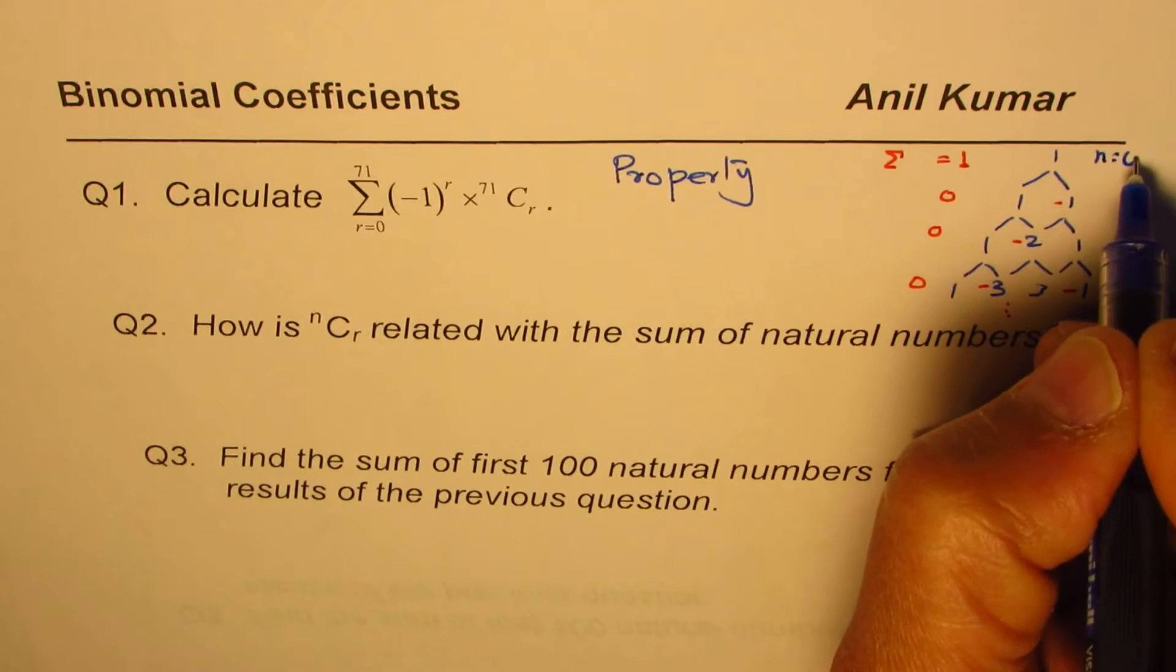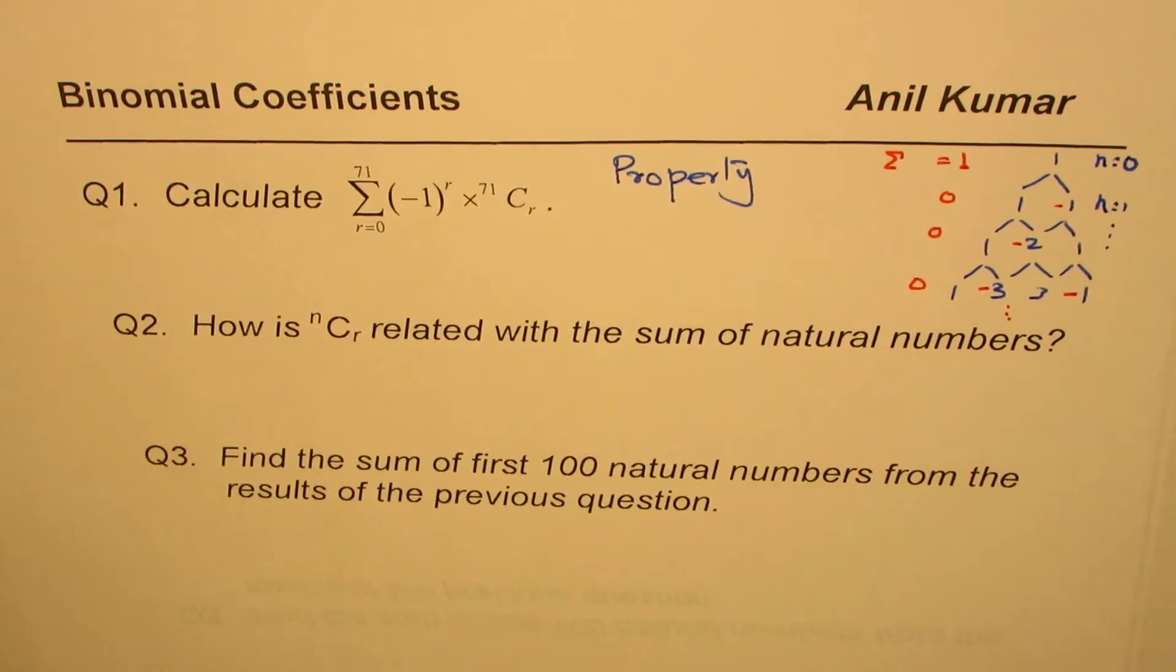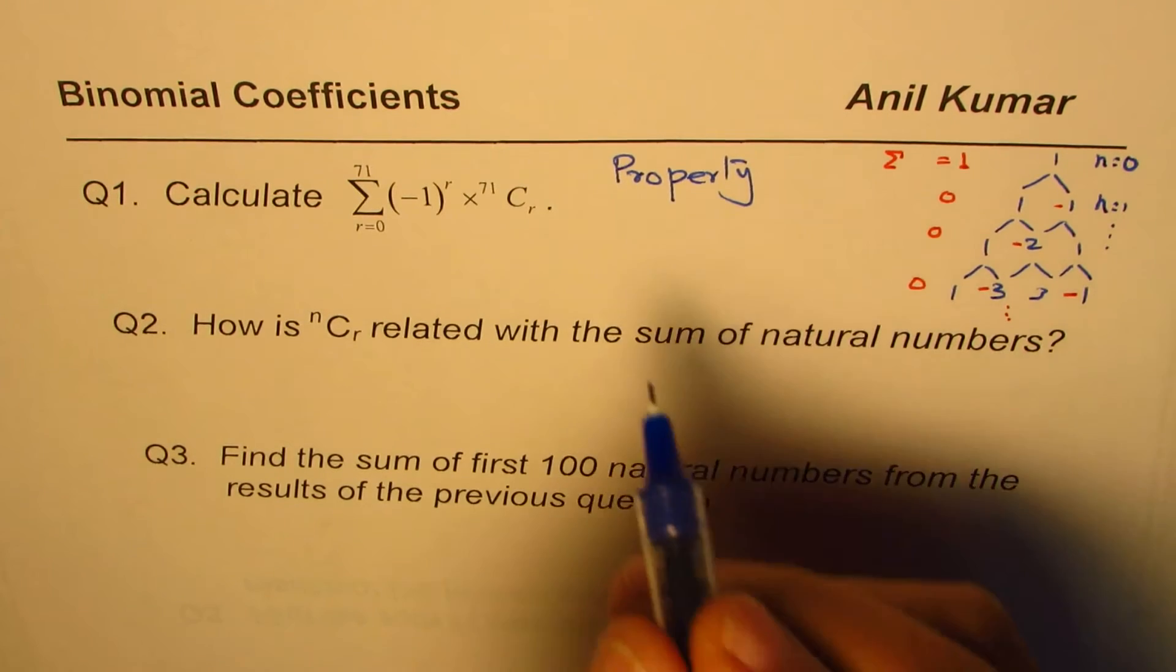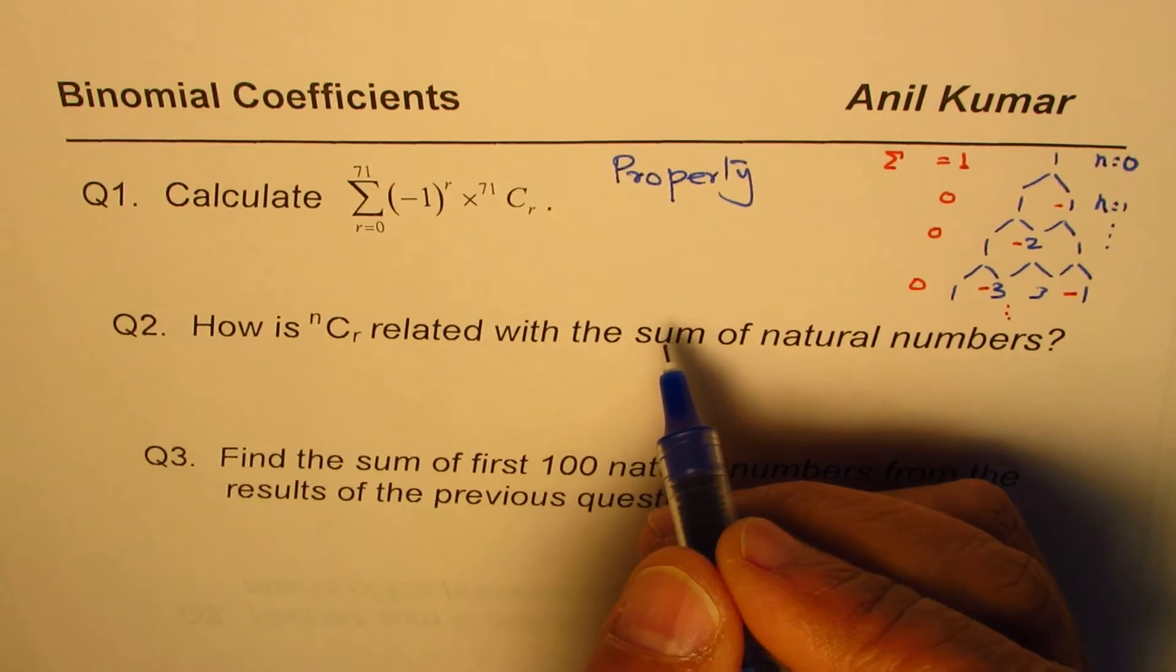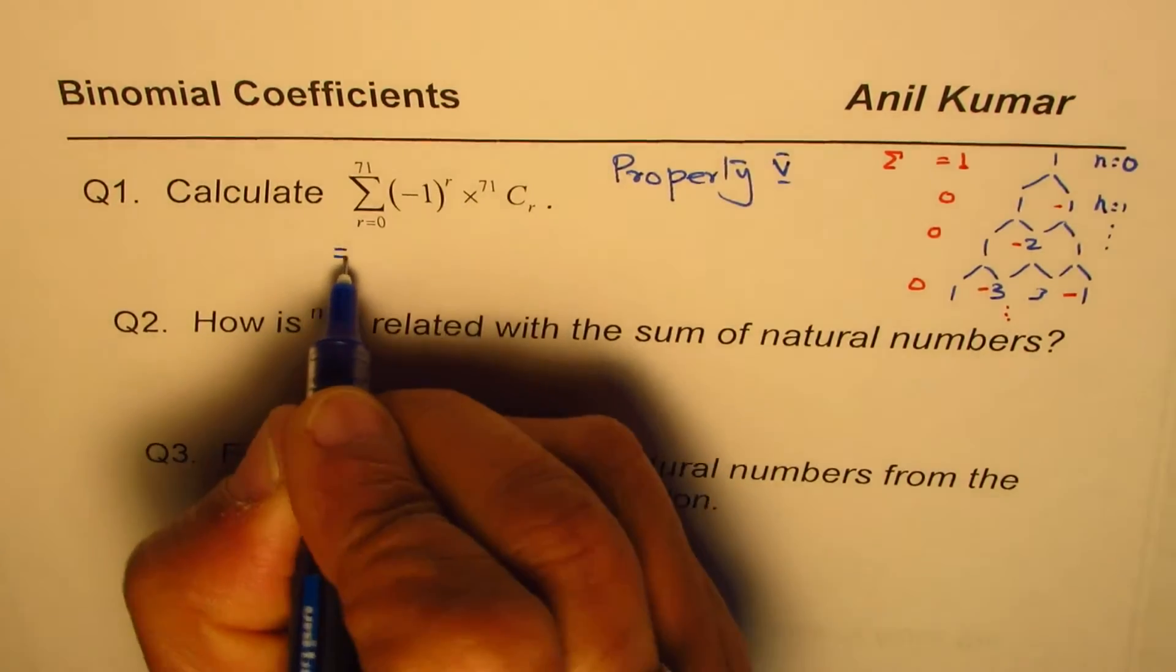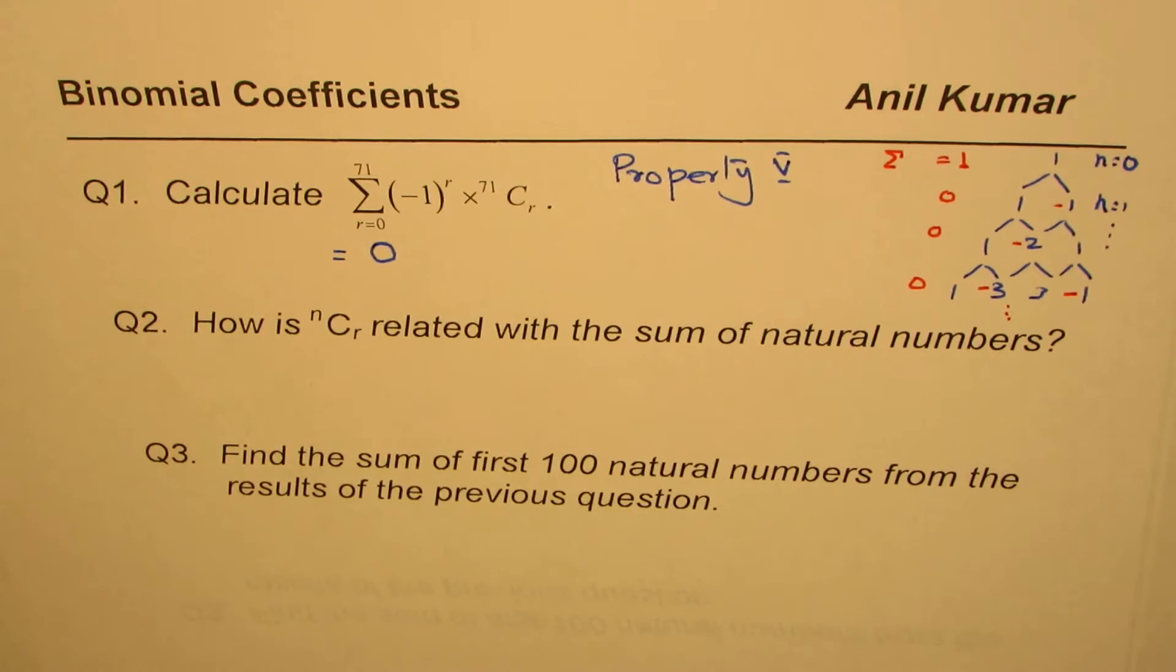So only in 0 row, here n equals to 0. And in this case, n equals to 1, and so on. So when n is equal to 0, the sum is 1. But if n is not equal to 0, in that case, the sum is 0. So that is your property 5. So from this property, we get this sum should be 0. So that is the direct application.